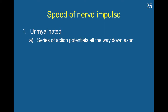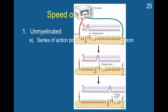The speed of a nerve impulse, or the speed at which the action potential travels down an axon, differs depending on whether the axon is unmyelinated or myelinated. When you have an unmyelinated axon, a series of action potentials travel down the axon — each sodium channel opens, it becomes more positive, then a neighboring channel opens, and this chain of sodium channel openings travels down the axon.